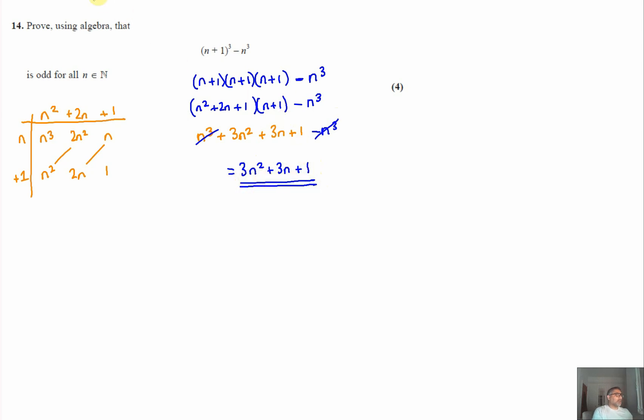So that's just your first step because what we need to do now to prove that it's odd for all natural numbers. Now, if it's a natural number, that means that it's either going to be even or odd. So we need to prove that for all even and odd numbers that this will always give us an odd expression.